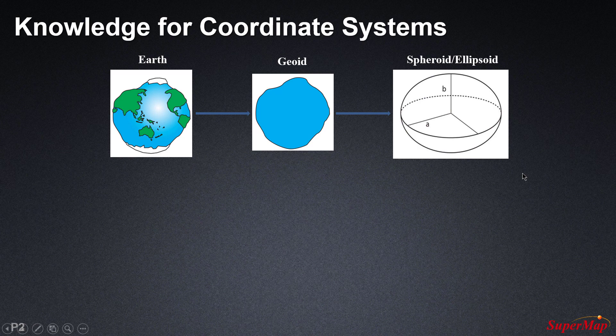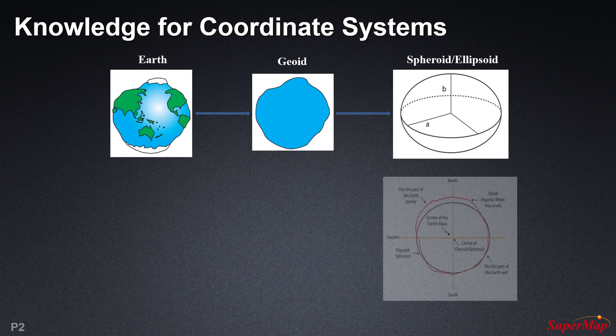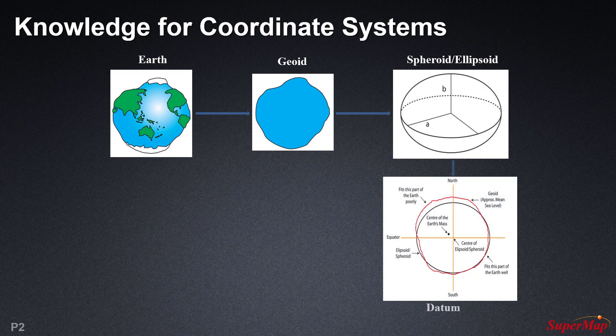An ellipsoid or spheroid is a mathematically defined surface that approximates the geoid. A datum is a system which allows the location of latitudes, longitudes, and heights to be identified onto the surface of the earth — that is, from where and how locations can be measured and defined locally to reduce inaccuracy.